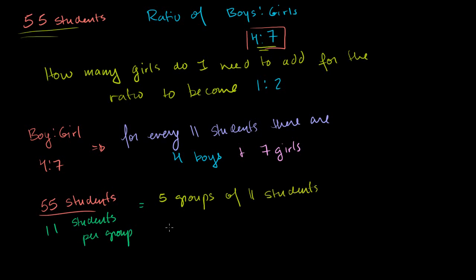And we've done this drill before. Every group has 4 boys and it has 7 girls. So we have 5 groups. 5 groups, each of them has 4 boys. That means we have 5 times 4, which is equal to 20 boys.